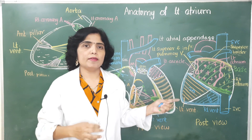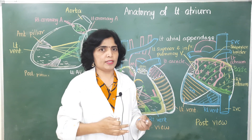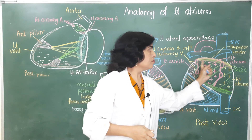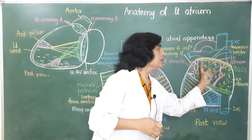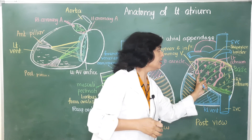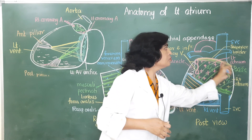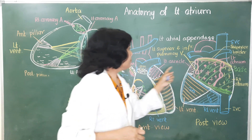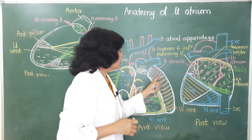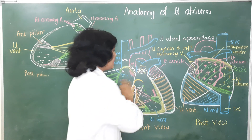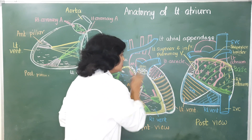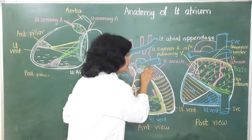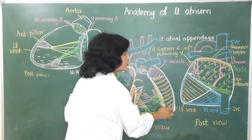The left atrium contributes to different features of the heart. It forms two-thirds of the base of the heart and the major part of the superior border of the heart. The left auricle contributes to the formation of the anterior or sternocostal surface, the left surface, and the left border of the heart.